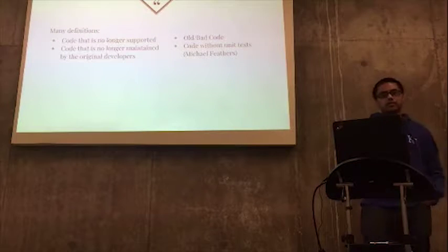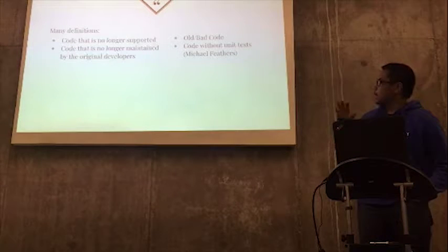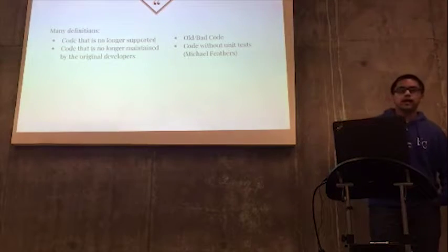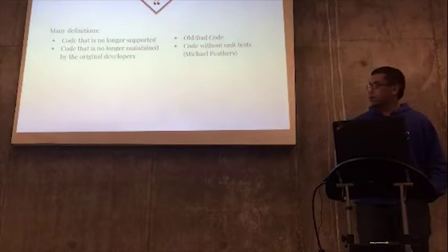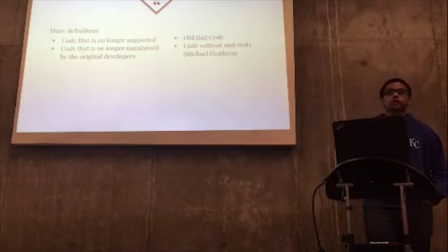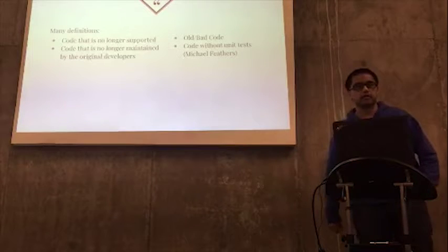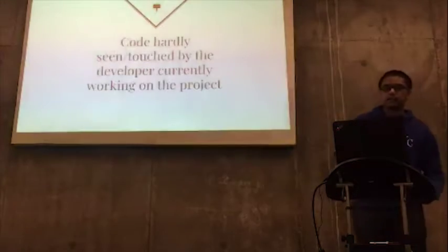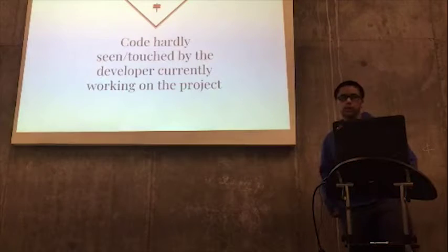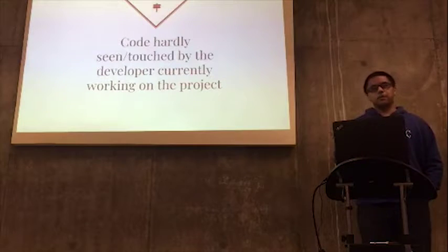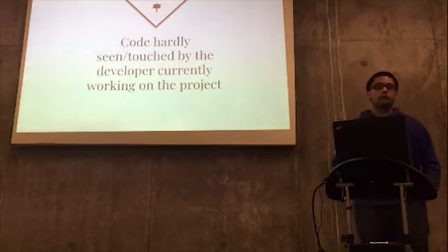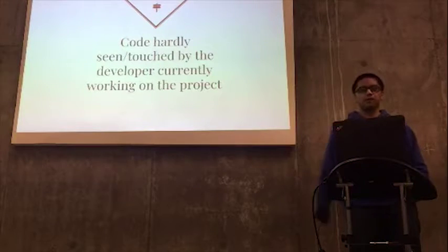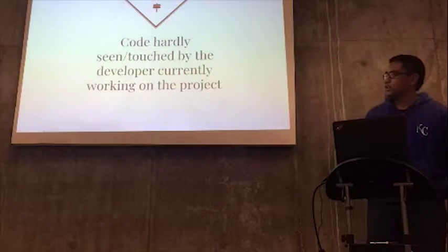All right. So there are many definitions to Legacy Code. As you can see here, they're all kind of connected in some sense. Some people say it's something that's not supported or something that's old and what people don't want to see. Michael Feathers, who actually wrote a book about working with Legacy Code, defines it simply as code without unit tests. My definition is kind of an amalgamation of all of them. I would say that it is code that's hardly seen or touched by the developer currently working on the project. Legacy Code can be code you wrote. There have been many times where I'm looking at code that I've written months in the past. I go to Bitbucket and press the blame button and it's me, of course. Every time.